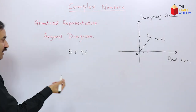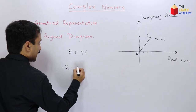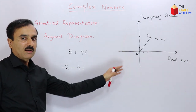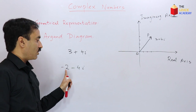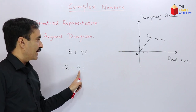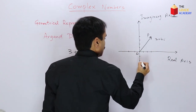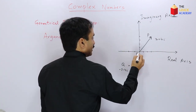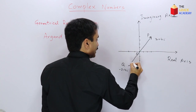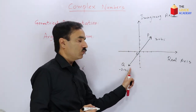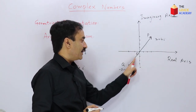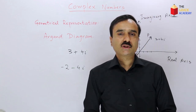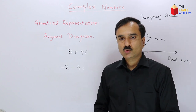Similarly, the Argand diagram of the complex number negative 2 minus 4i is represented by 2 units on the negative x-axis and 4 units on the negative y-axis, giving a point Q. If we connect point Q with the origin by a vector directed from the origin to Q, we get the Argand diagram of negative 2 minus 4i. Dear students, with this we come to the end of today's lecture. See you in the next session.